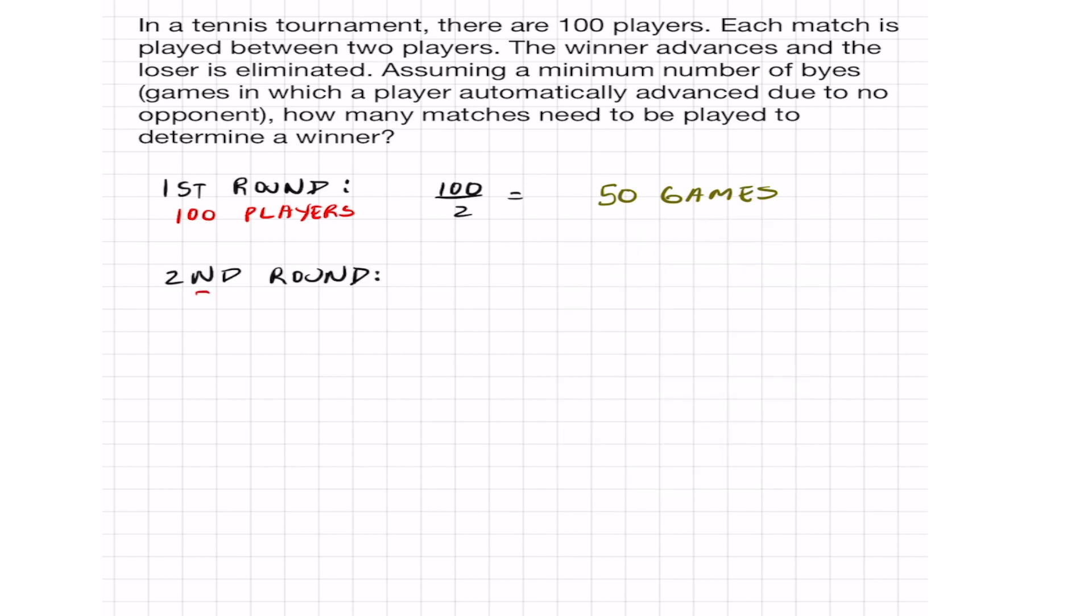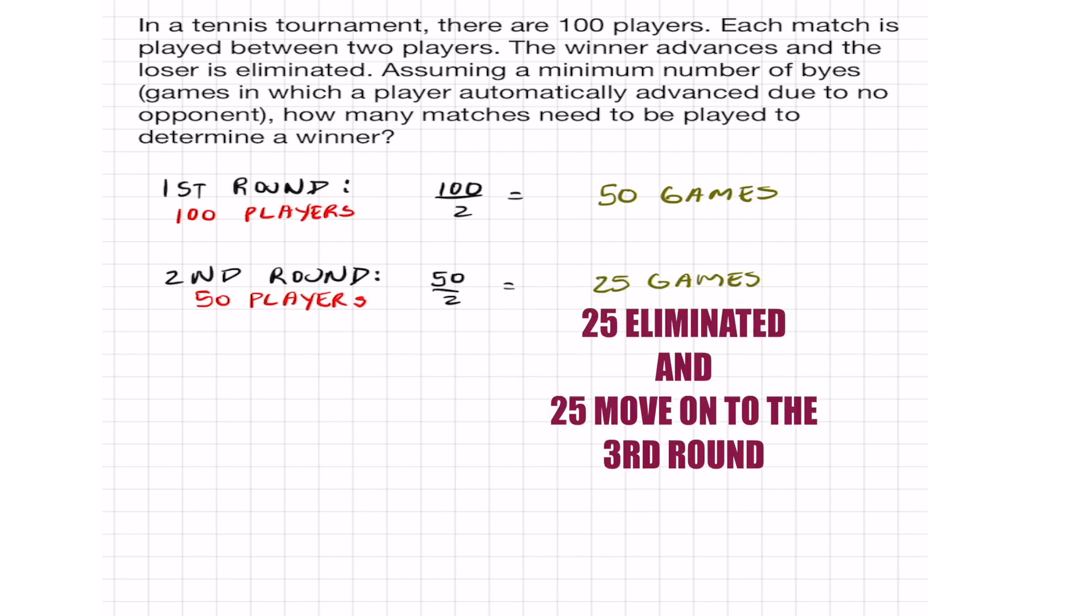Starting off the second round, we got 50 players left. To determine how many games need to be played, do the same thing. 50 divided by 2, and we will get 25 games played in the second round, which also means that 25 players will be eliminated.